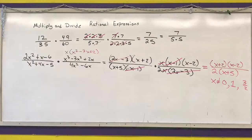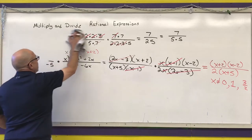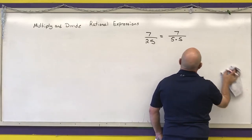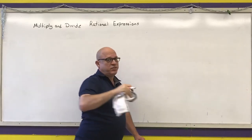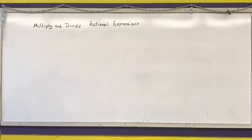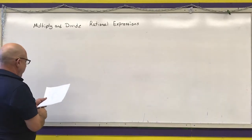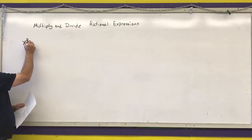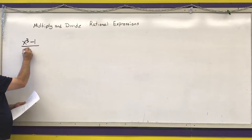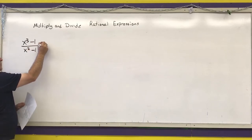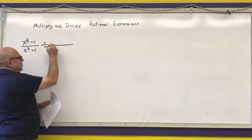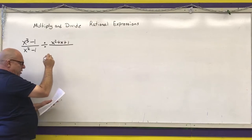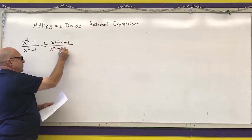Here's an example of division. I'll write it down with the second fraction flipped over and factored at that time. We want to do (x³ - 1) over (x² - 1) divided by (x² + x + 1) over (x² + 2x + 1).